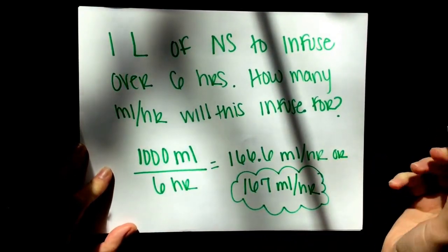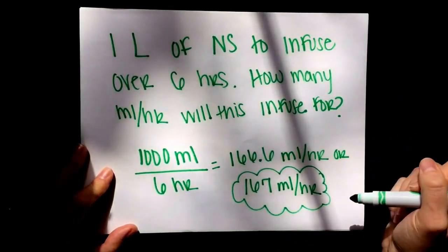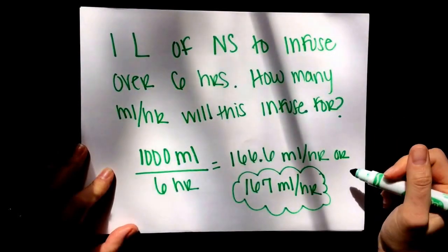So we do 1,000 milliliters divided by six hours and that gives us 166.6 milliliters per hour or 167 milliliters per hour. And that is our rate. Now we have our rate at which to program the pump.